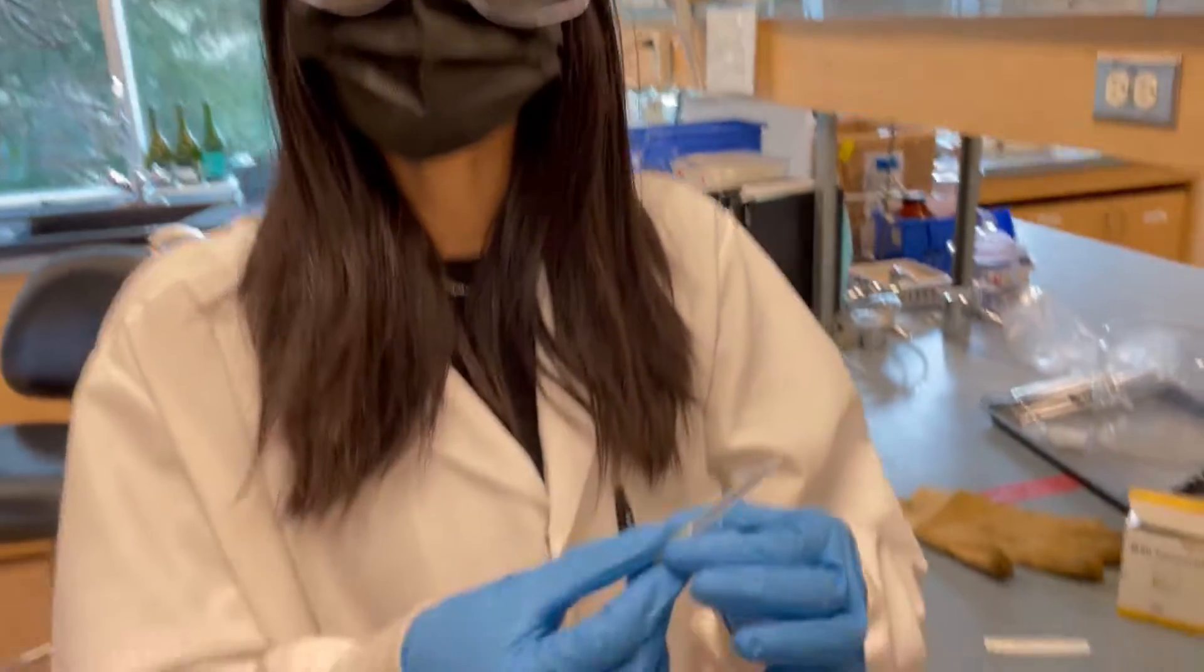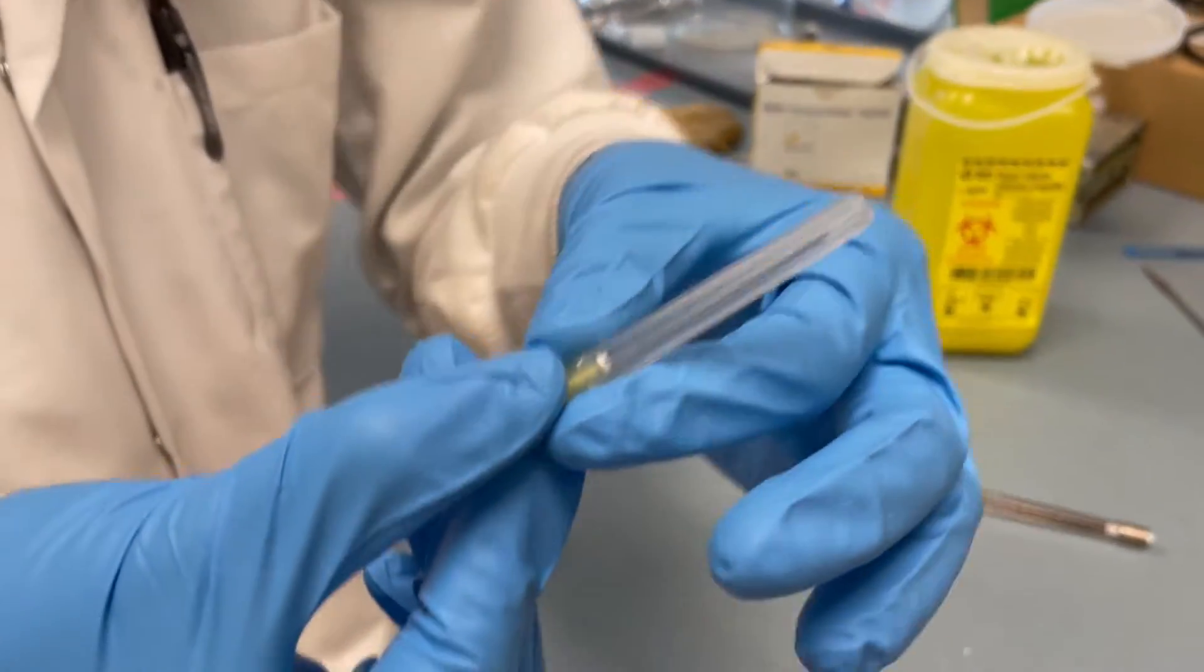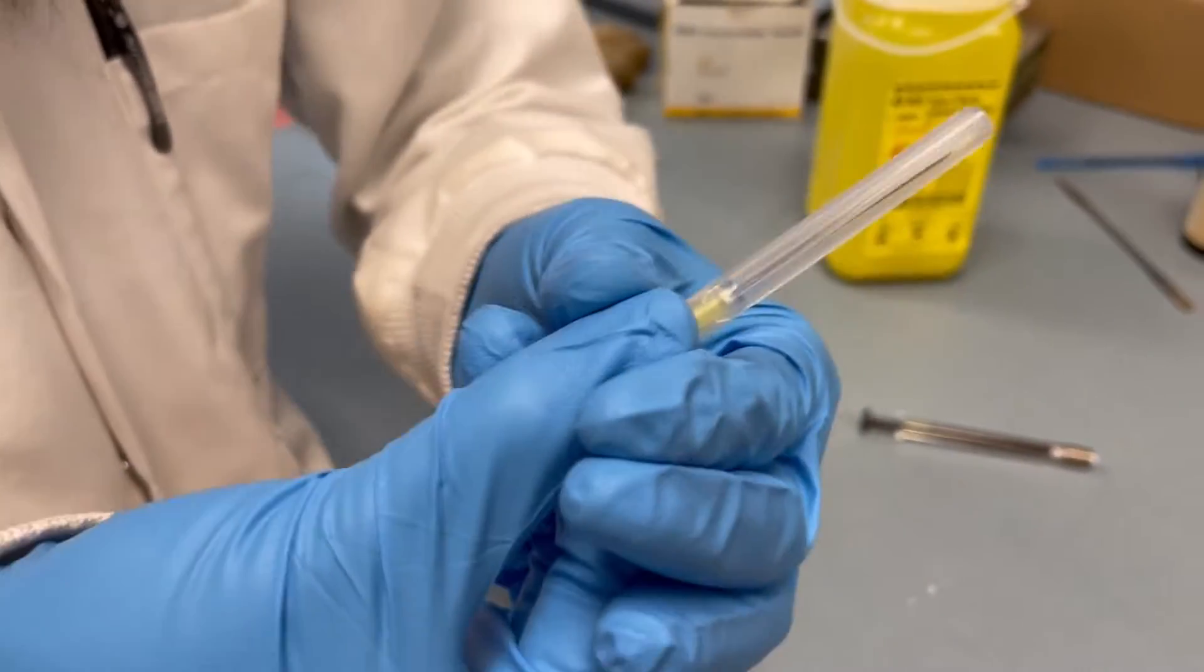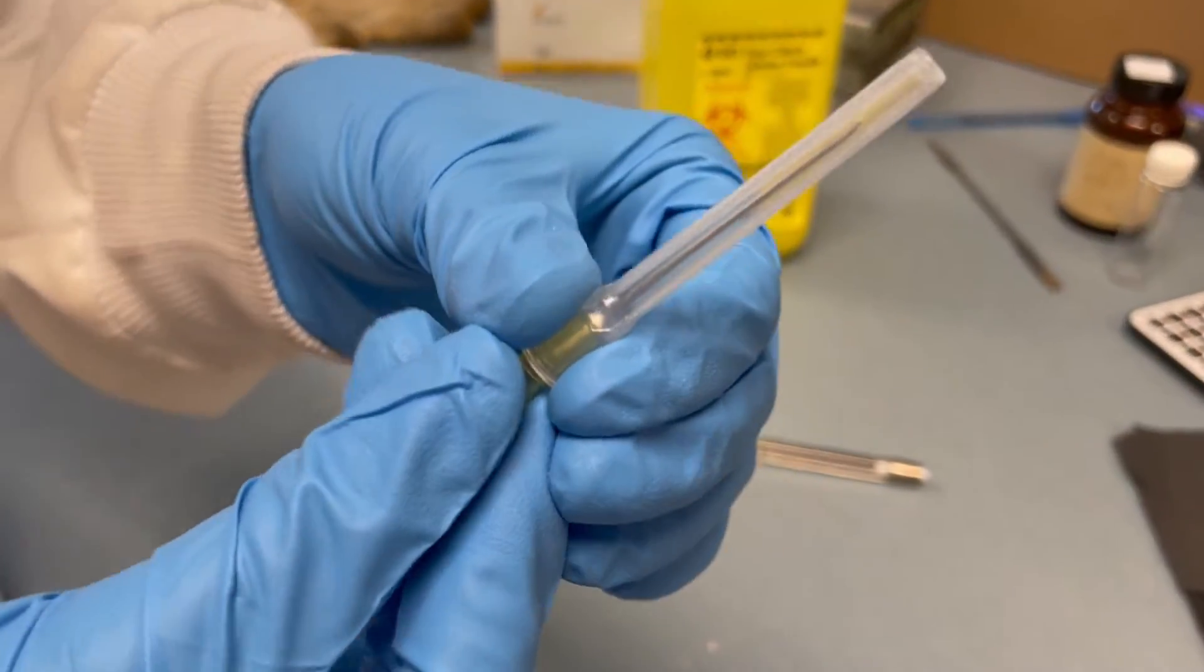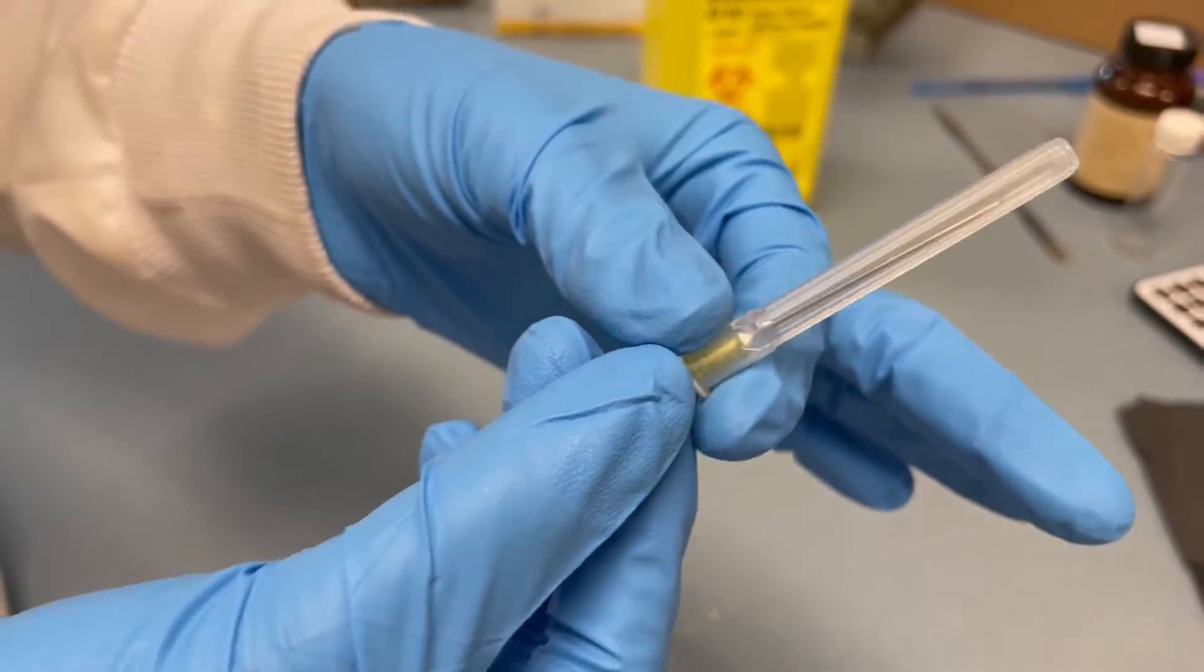When uncapping needles you shouldn't apply excessive force because when pulling the cap off it might cause your hand to come back and result in an accidental stabbing. Instead you want to lightly twist the cap and that'll cause it to come off.